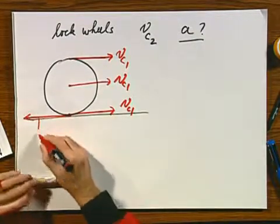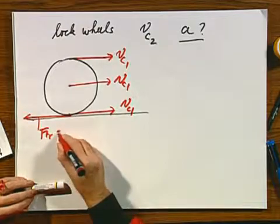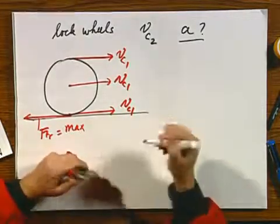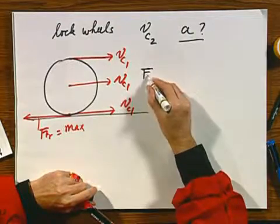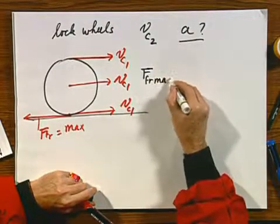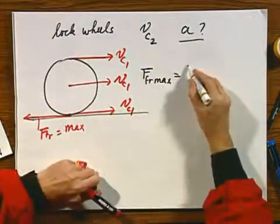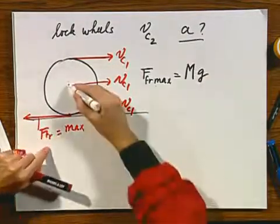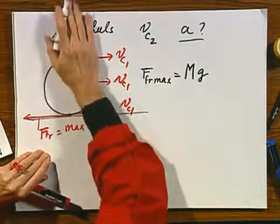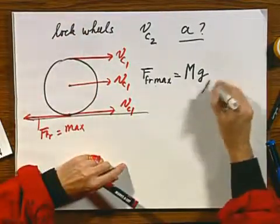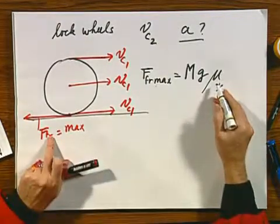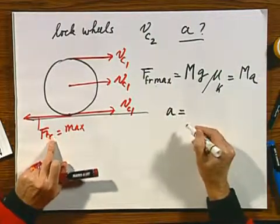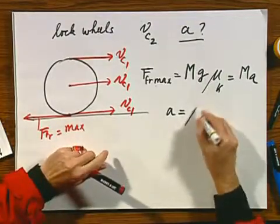And here, I will have a frictional force, which is the maximum value possible, because the whole thing is skidding. Well, the friction maximum, and I'll take all four wheels together, it makes no difference, is the total mass of the car times G, which is this normal force. All these four wheels together must push back upwards, with a force MG, times the friction coefficient mu_K, which is the kinetic friction coefficient because it's sliding, and that must be MA.